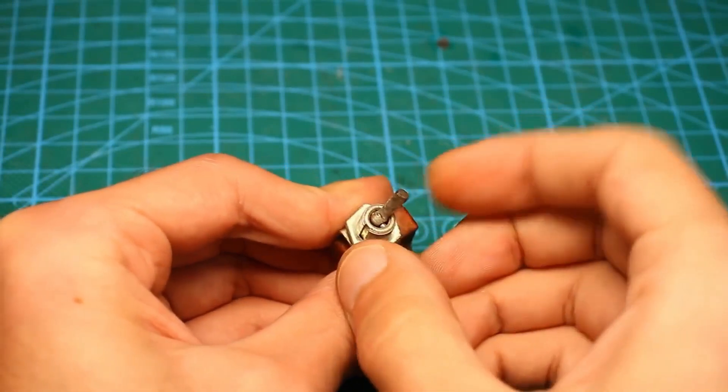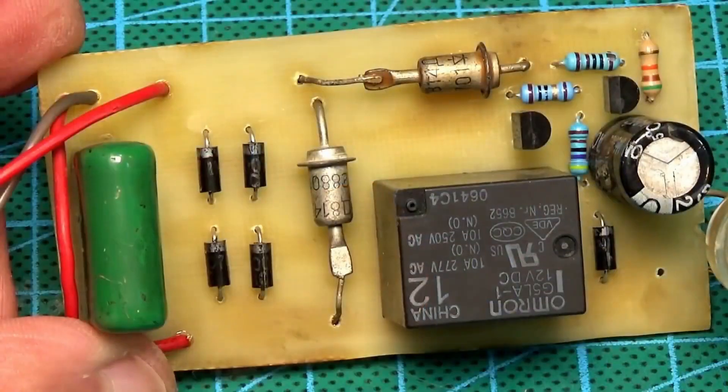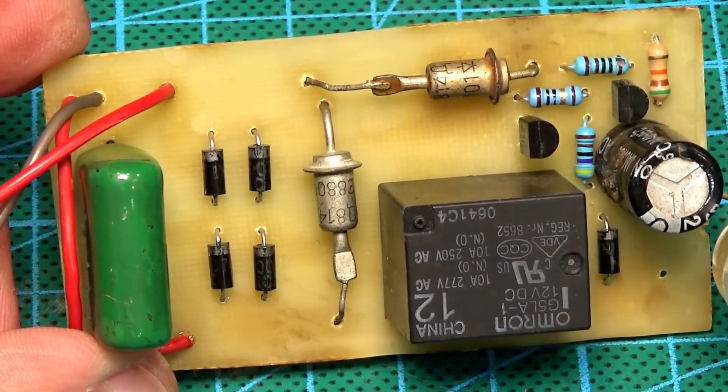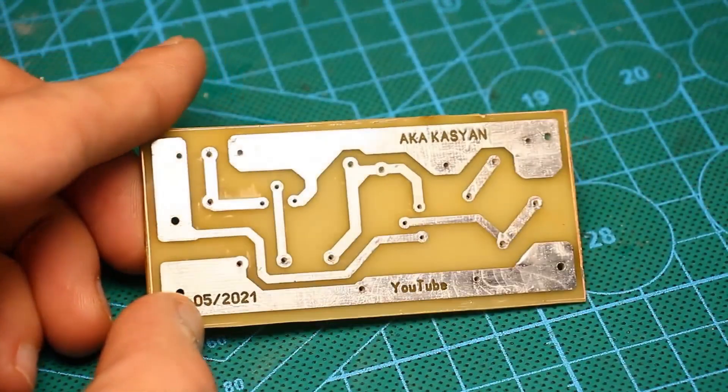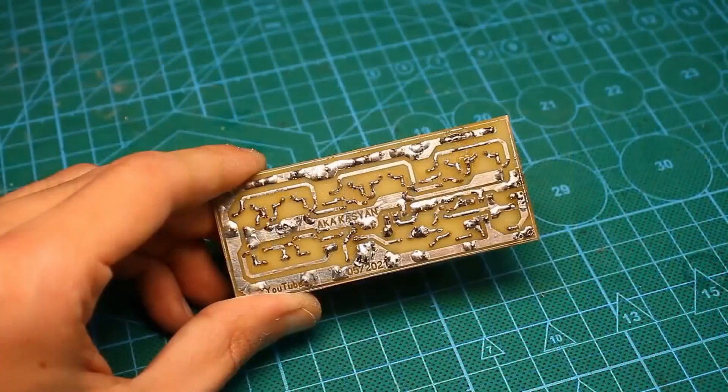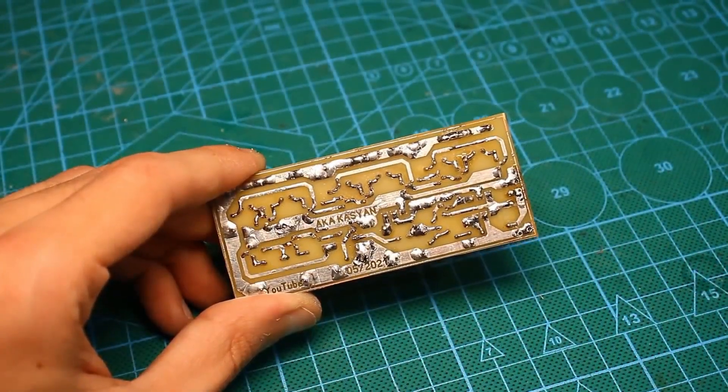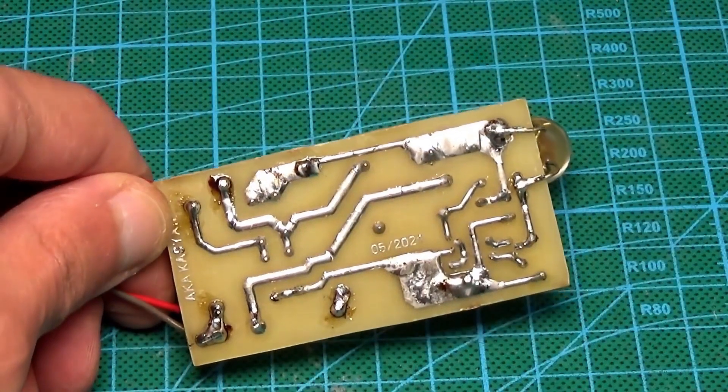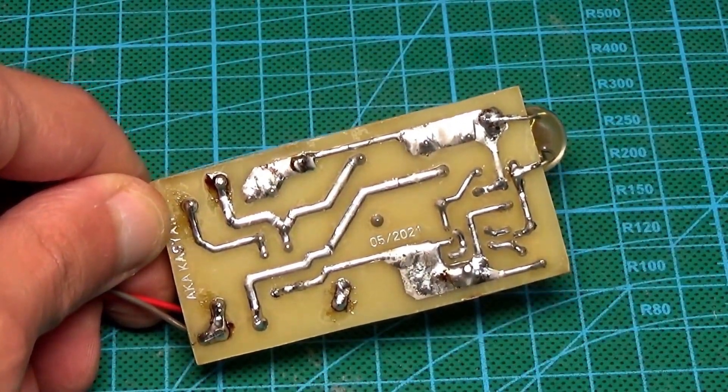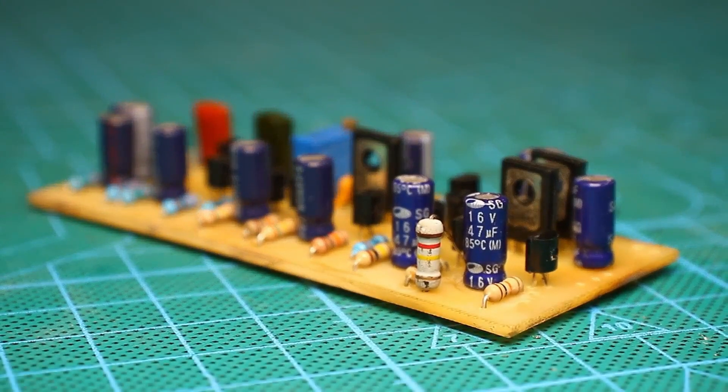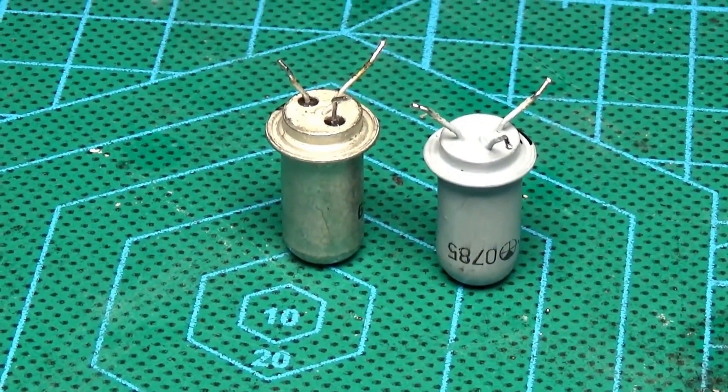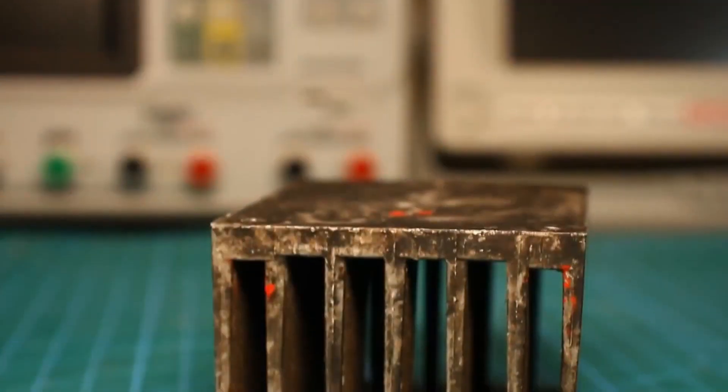All the circuits in this video are taken from books and radio magazines. I will additionally specify the sources in the description. The third point is that I have developed printed circuit boards for almost all the circuits, which can be downloaded along with the project's general archive. I slightly modernized some of the circuits and implemented them using modern imported components, as finding the original components might be problematic. Well, now let's get started.